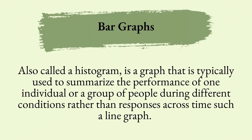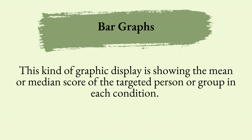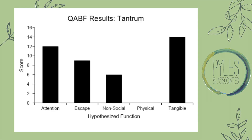A bar graph, also called a histogram, is typically used to summarize the performance of one individual or a group of individuals during different conditions, rather than tracking responses over time like a line graph. This kind of graphic display shows a mean or median score of the target behavior or the person or group within each condition. You want to use a bar graph to summarize and compare large amounts of data that are easy to read. Don't use it if you have more than 60 data points — that's going to be really hard to read.